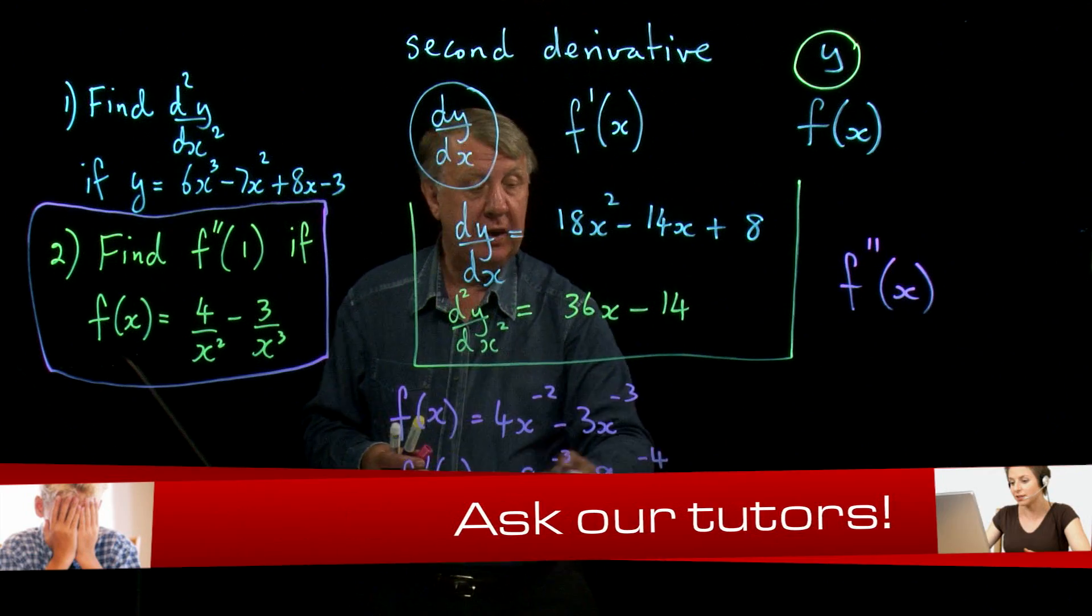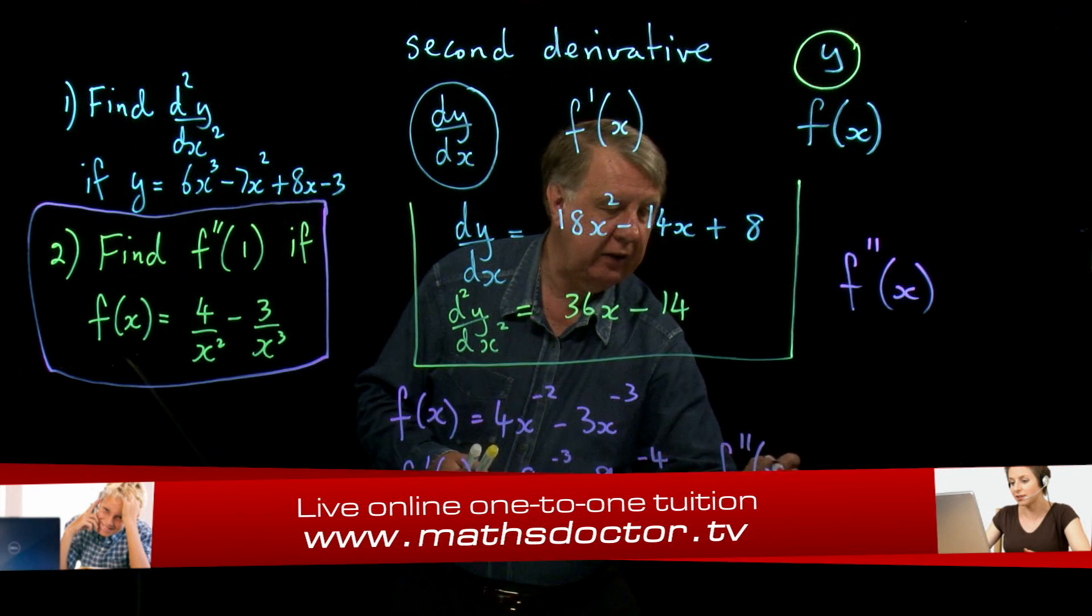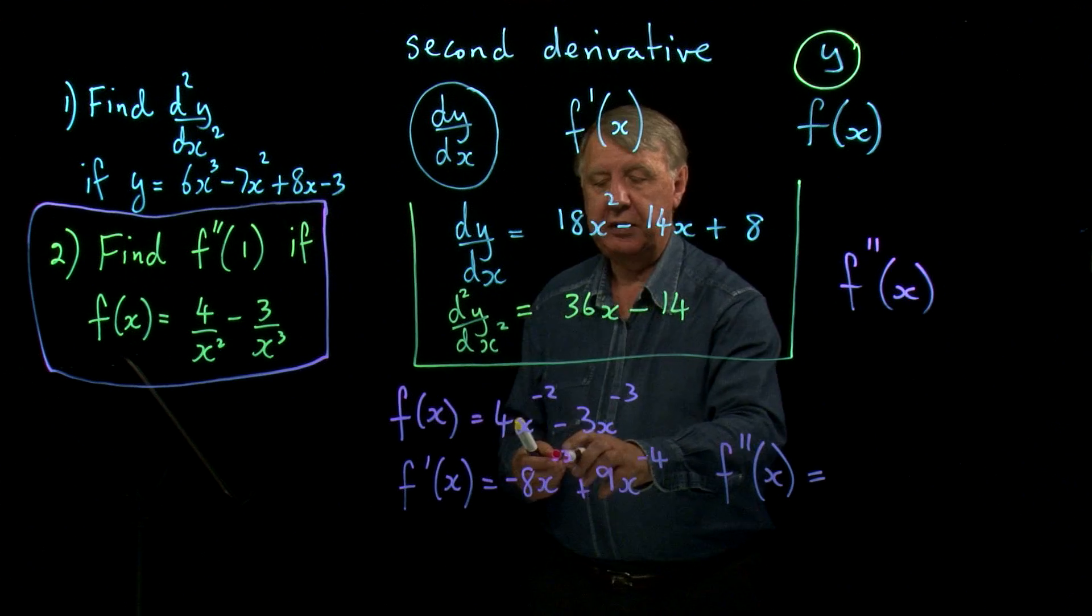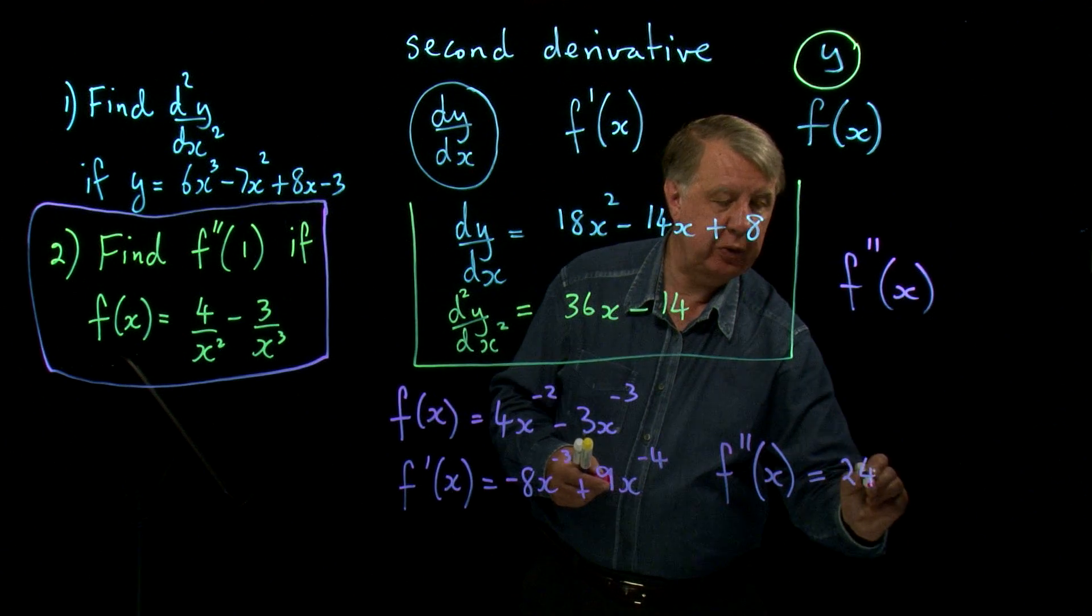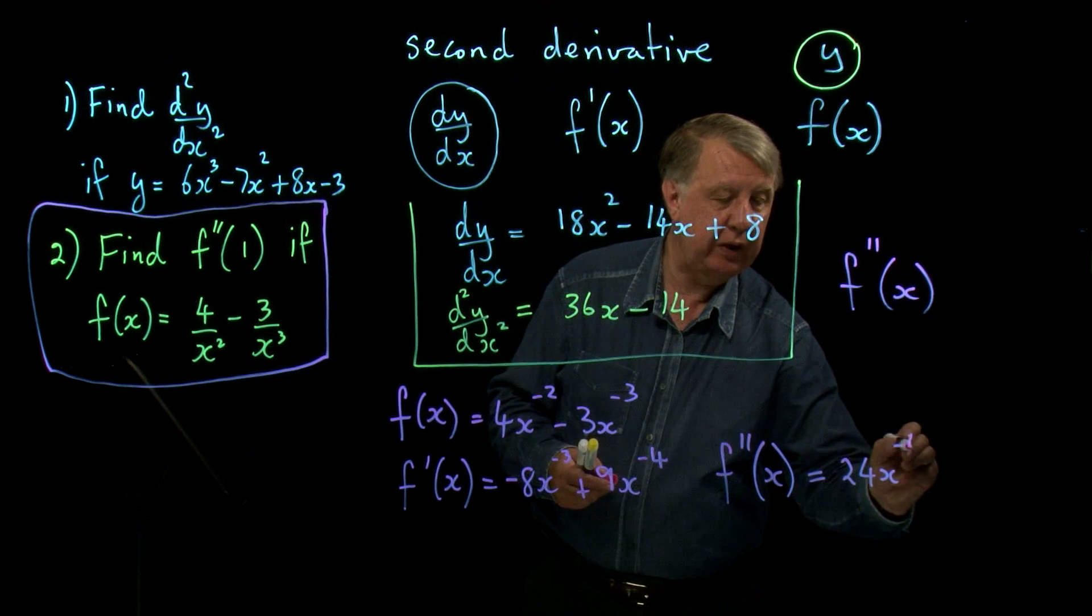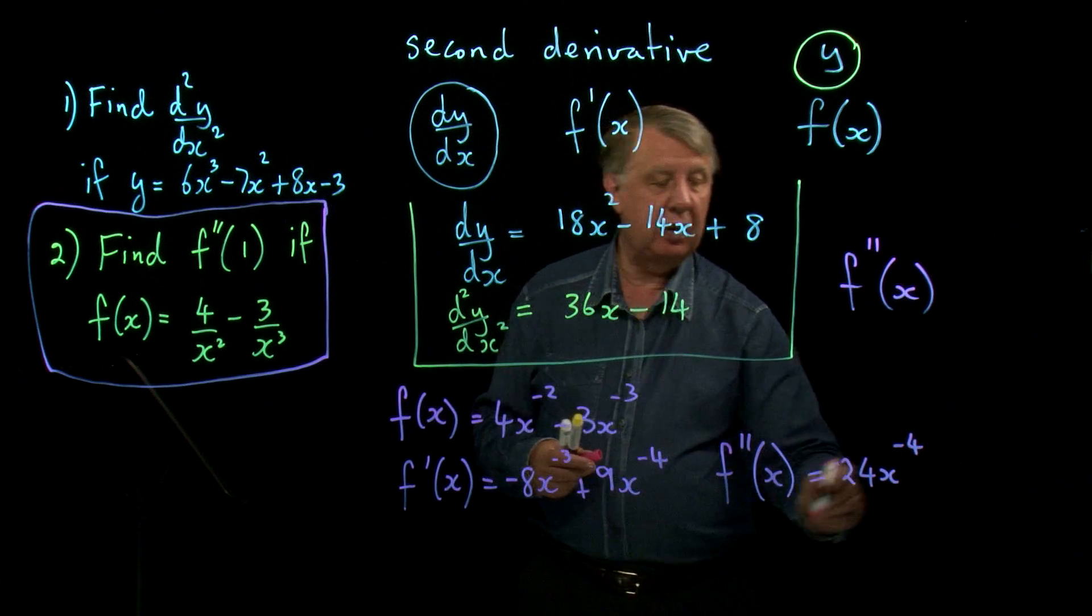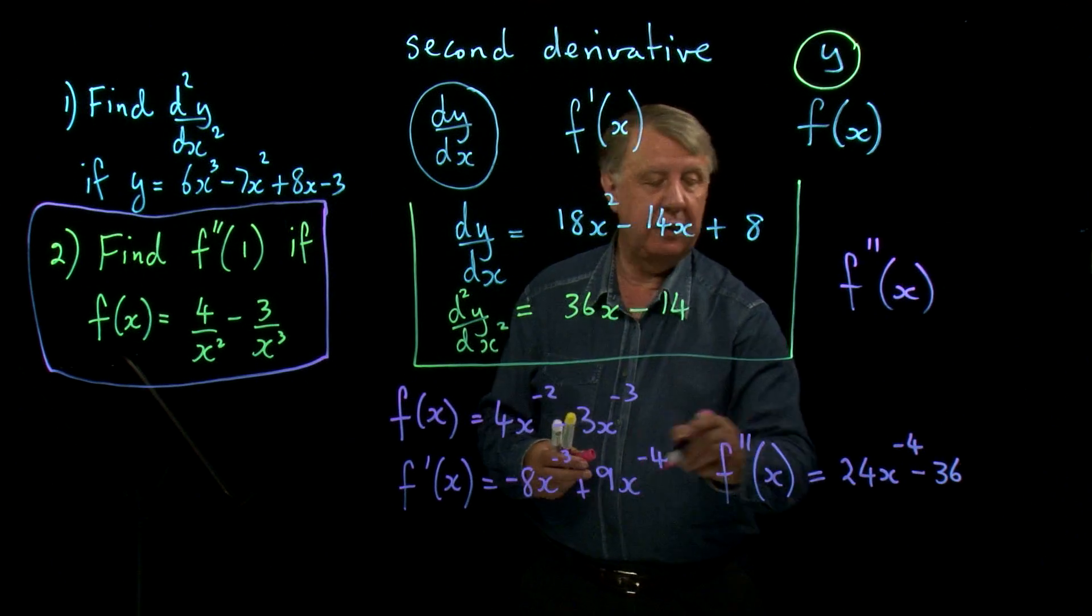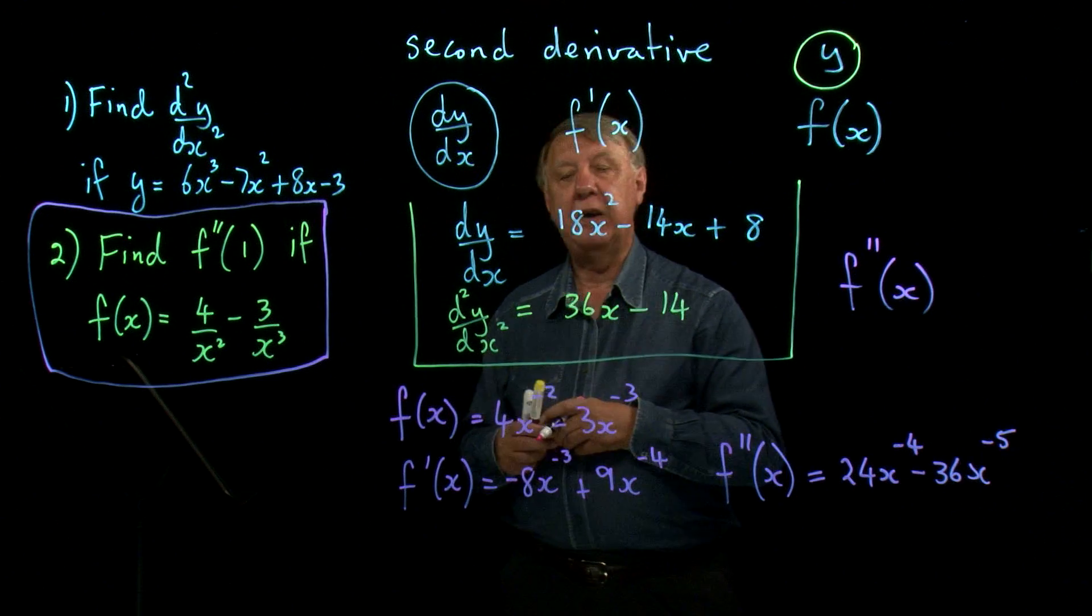Now I have to differentiate that again. So that's f double dashed x. Negative 3 times negative 8 is plus 24. Take 1 away from negative 3 is negative 4. Negative 4 times 9 is negative 36, and take 1 away from that, and I get negative 5.